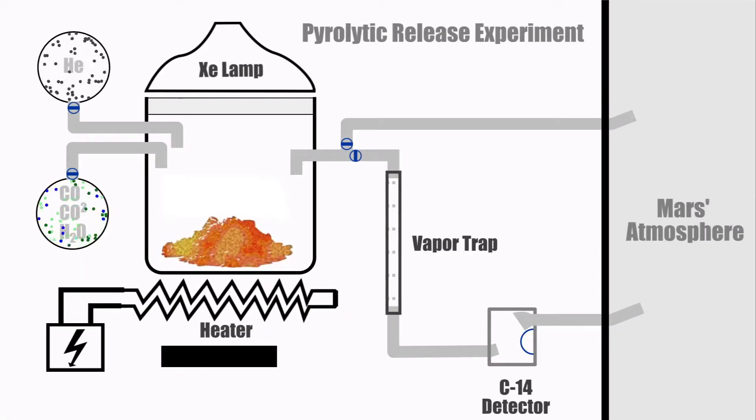Dry soil scooped by the robotic arm is placed in an incubator chamber. Radioactive carbon dioxide and carbon monoxide using carbon-14 is introduced into the chamber. A xenon light is then turned on to mimic Martian daylight. The experiment runs for five Martian days.